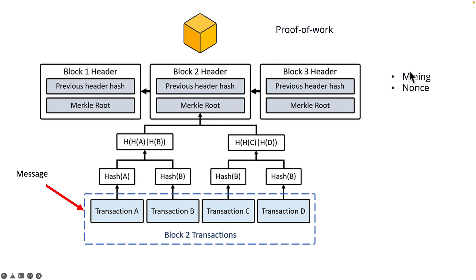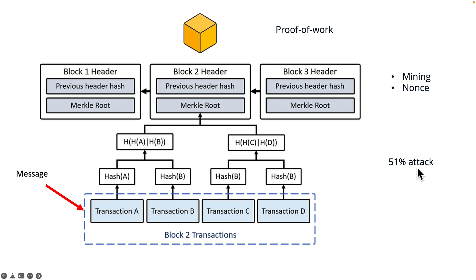The work in proof of work is mainly mining, and the nonce is proof that the miner finished the work. Once a miner gets the nonce, transactions are written to the block and the blockchain keeps growing. The messages — which are the transactions — are stored in blocks and cannot be tampered with, unless there is a 51% attack. The cost of such an attack is extremely high because attackers would need to redo all the mining again, so it's very unlikely to happen. Proof of work is therefore a very secure consensus mechanism.